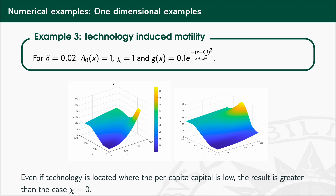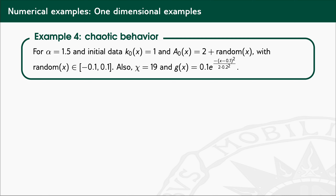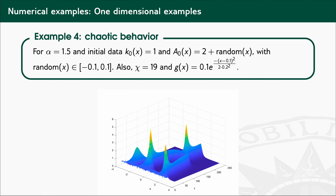We explain this behavior as a reinforcement of per capita capital induced by technological motility. Finally, we show an example of chaotic behavior introduced by the fractional operator. For alpha equals 1.5, initial data for per capita capital equal to 1, and a random distribution for initial technology progress data, assuming very strong technology-induced motility, we obtain globally bounded solutions — solutions that do not blow up at finite time — but with rather chaotic behavior.